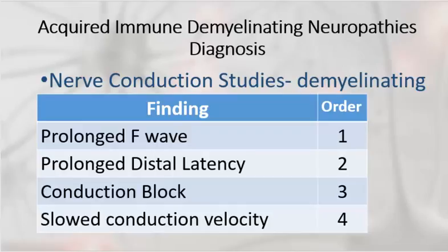Another finding is that of a prolonged distal latency, like one sees in carpal tunnel syndrome, but in this case any of the nerves may show prolongation of that distal segment. Then there are conduction blocks in demyelinating neuropathies, which represent focal reductions in conduction velocity — such as at the elbow, the wrist, the knee, and the peroneal nerve — with not only slowing but reduction in compound motor action potential amplitude when stimulated more proximally. Finally, you'll see generalized slowing of conduction velocities, but that may take up to two to four weeks in Guillain-Barré.